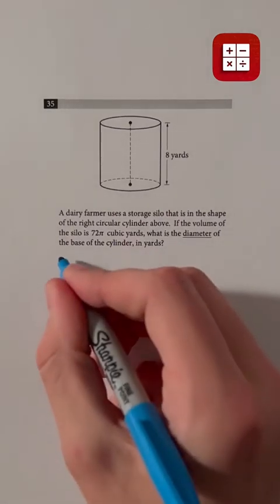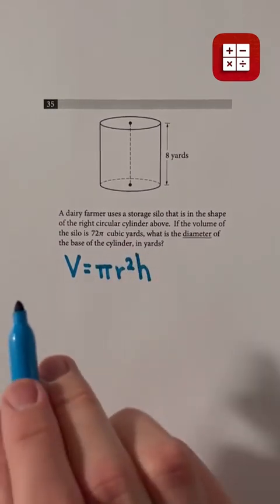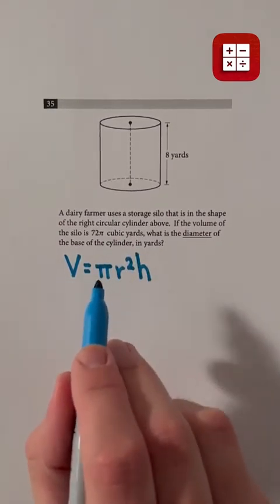Remember that the formula for the volume of a cylinder is V = πr²h, where V is the volume, r is the radius, and h is the height.